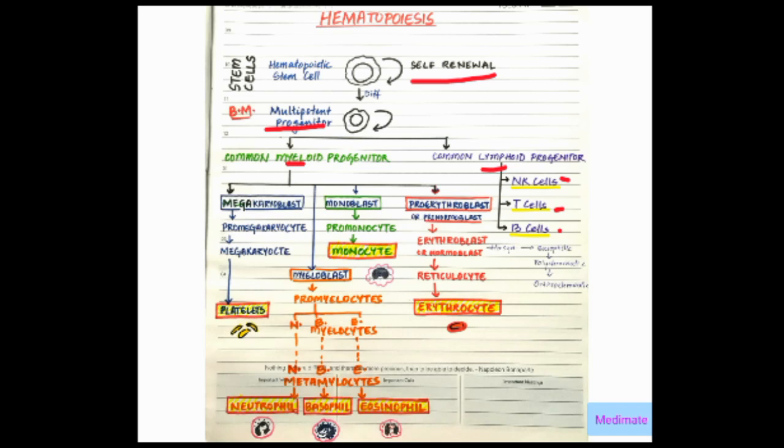We'll look into the erythrocyte series later. First, let's see the first three ones. Megakaryoblast gives rise to pro-megakaryocyte. Cyte means smaller cells, so blast divides into cytes. Pro means before; therefore, before megakaryocyte comes pro-megakaryocyte, and evidently after pro-megakaryocyte comes megakaryocyte.